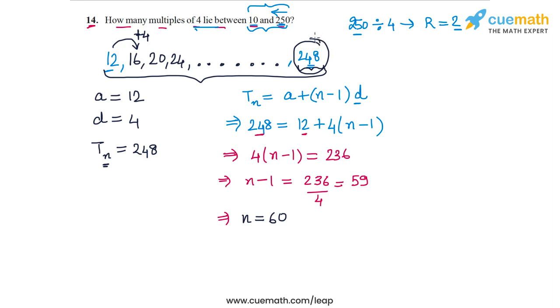So the index of 248 in this AP is 60, which means that there are 60 terms in this AP, or in other words, there are 60 multiples of 4 that lie between 10 and 250. So that's our answer.